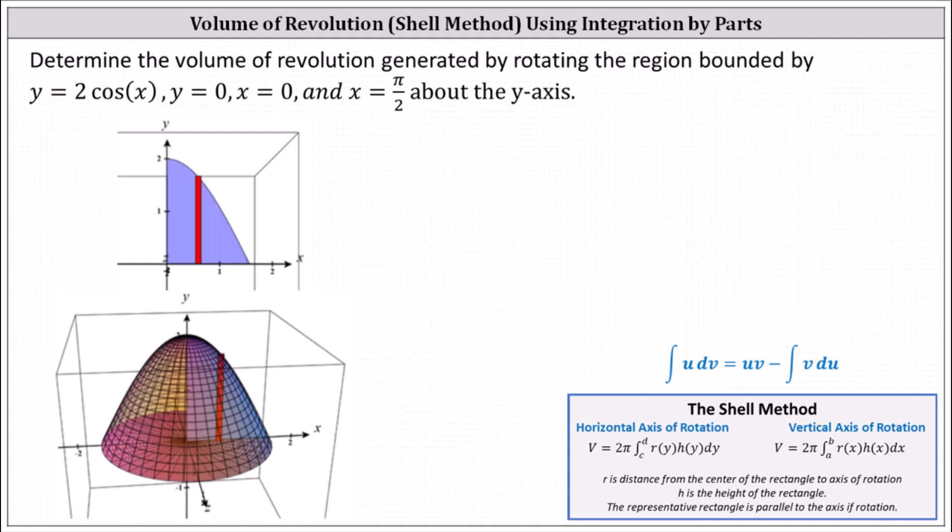Determine the volume of revolution generated by rotating the region bounded by y equals 2 cosine x, y equals 0, x equals 0, and x equals pi divided by 2 about the y-axis.